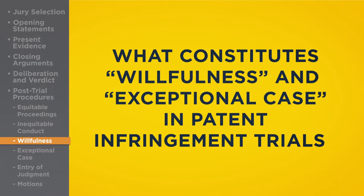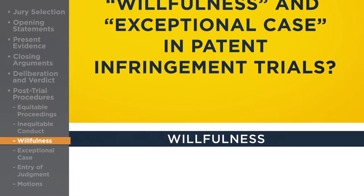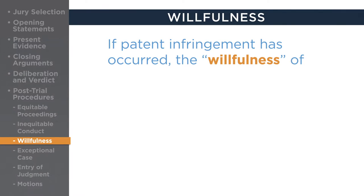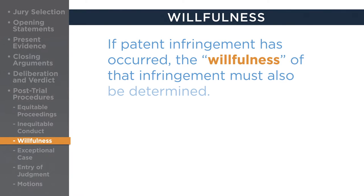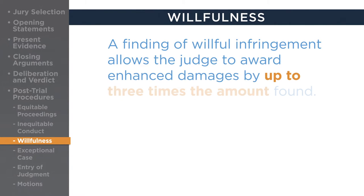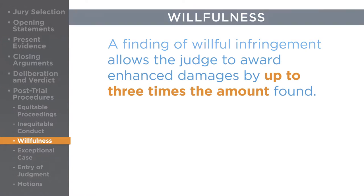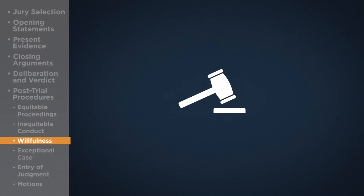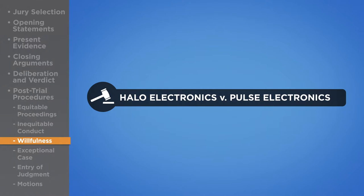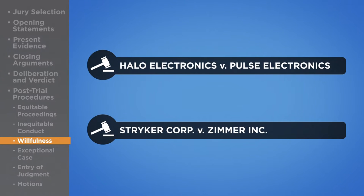What constitutes willfulness and exceptional case in patent infringement trials? If a judge or jury finds that patent infringement has occurred, the willfulness of that infringement must also be determined. A finding of willful infringement allows the judge to award enhanced damages by up to three times the amount found. In 2016, the Supreme Court issued two closely related rulings — Halo Electronics Inc. vs. Pulse Electronics Inc. and Striker Corp. vs. Zimmer Inc.